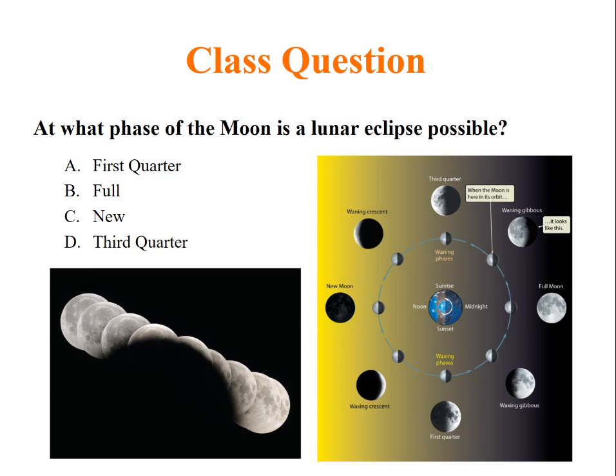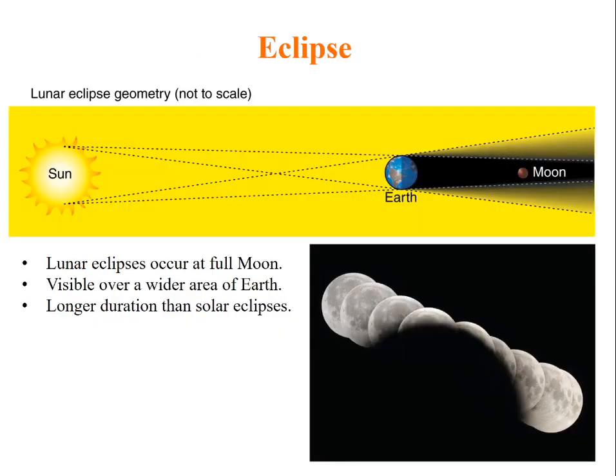At what phase of the Moon is lunar eclipse formed? That is full Moon. Lunar eclipse occurs at full Moon, visible over a wide area of Earth. It has longer duration than solar eclipse.